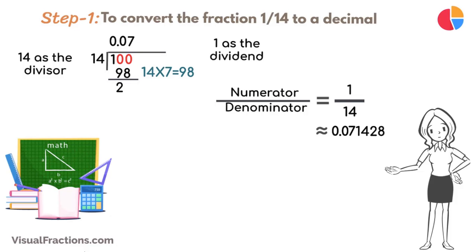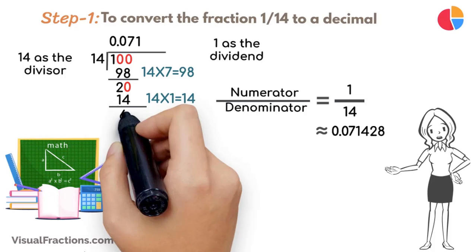Next, bring down another 0 to make it 20. 14 goes into 20 once, updating the quotient to 0.071. Multiply 14 by 1 to get 14, and subtract this from 20, leaving a remainder of 6.